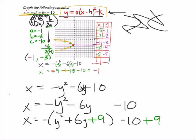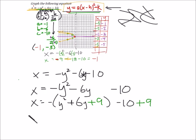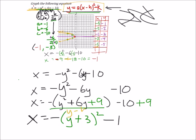That gives us the vertex form: x equals negative times (y minus negative three) squared, and negative ten plus nine is minus one. So x equals negative (y plus three) squared minus one. The h-value is negative three, which is our y-value for the vertex, and negative one is our x-value — confirming the vertex at negative one, negative three. The negative coefficient indicates the parabola opens to the left, which matches our graph.